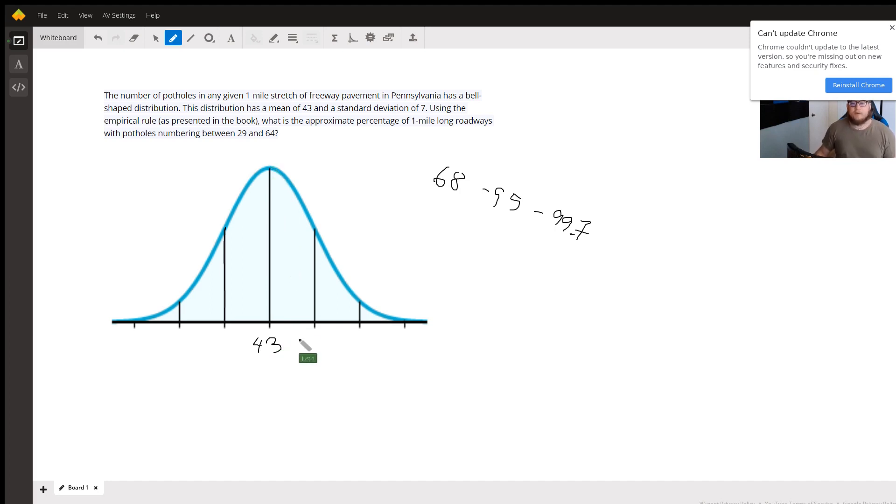And if we were to go one standard deviation, remember the standard deviation is 7, so if we were to go 7 above the mean or 7 below the mean, which in this case would put us at 50